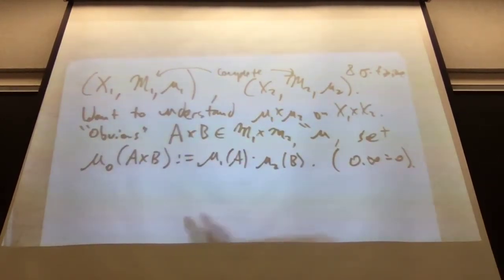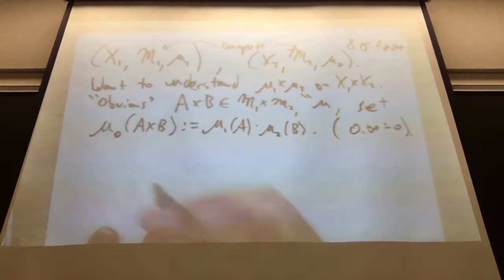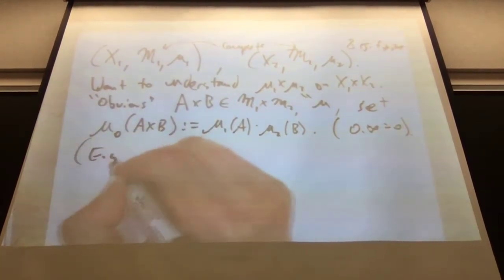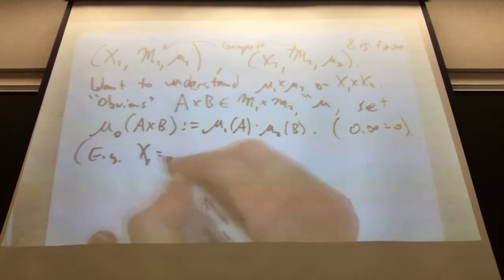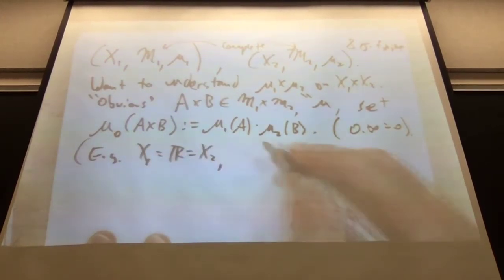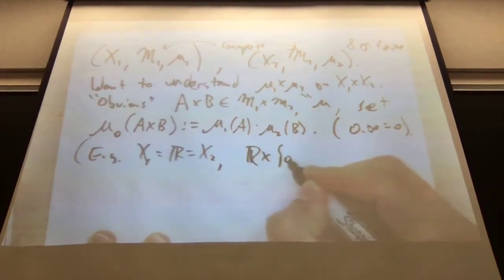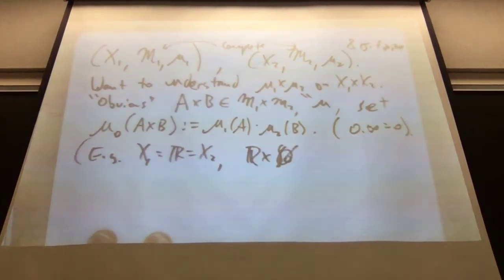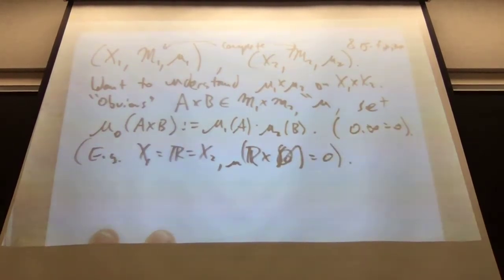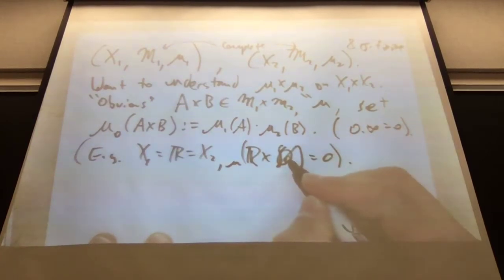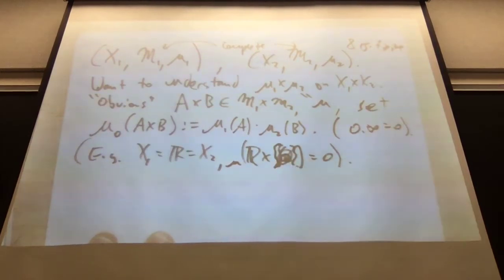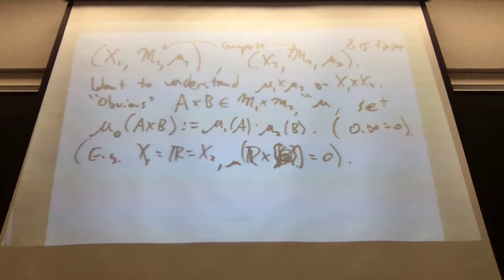For example, if X_1 is R and X_2 is R, then I want a line in the plane to have measure zero. R cross a point — the set R times {0} should have measure zero. That's exactly what this convention gives us: infinity times zero equals zero.